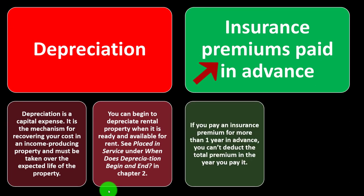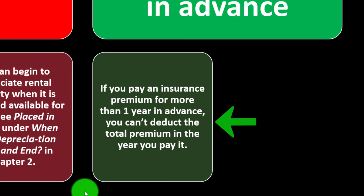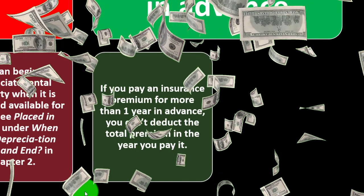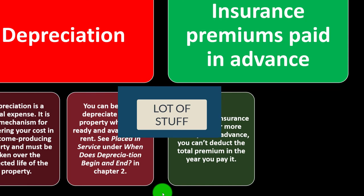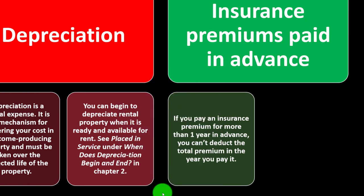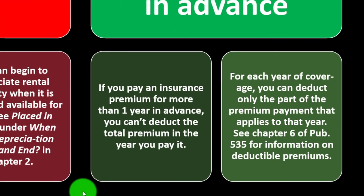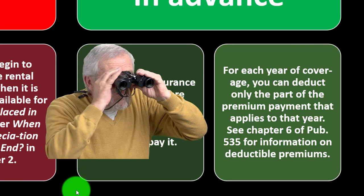Insurance premiums paid in advance: if you paid an insurance premium for more than one year in advance, you can't deduct the total premium in the year you paid it. The IRS doesn't allow prepaying multiple years of insurance to manipulate current-year income. For each year of coverage, you can deduct only the part of the premium payment that applies to that year. See Chapter 6 of Publication 535 for information on deductible premiums.